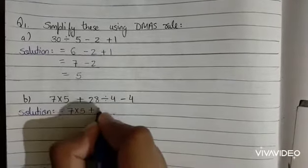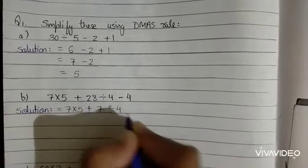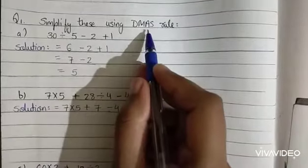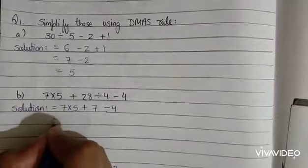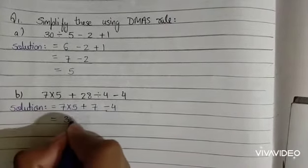Now according to DMAS rule, then we multiply. Here multiplication is given, so we will multiply. 7 into 5, 35.